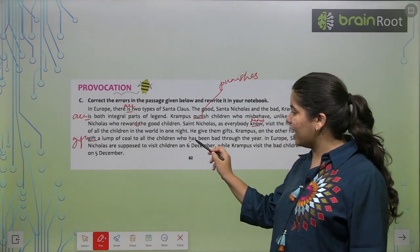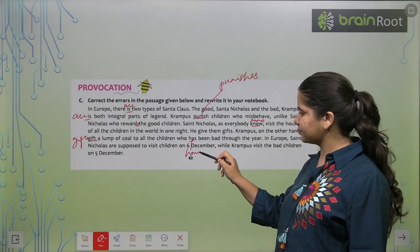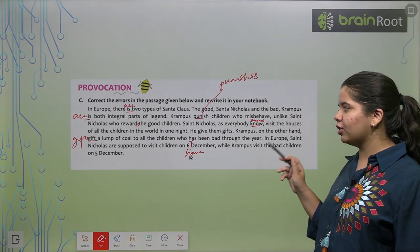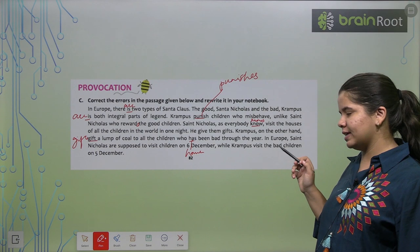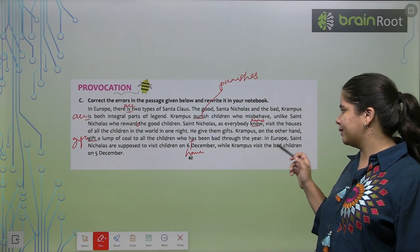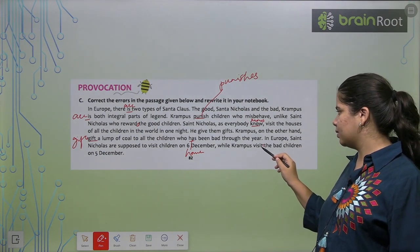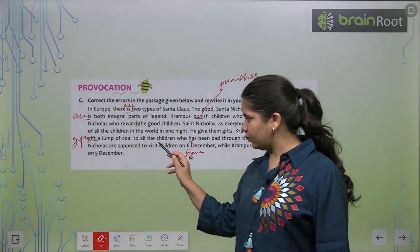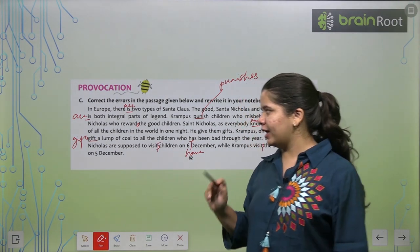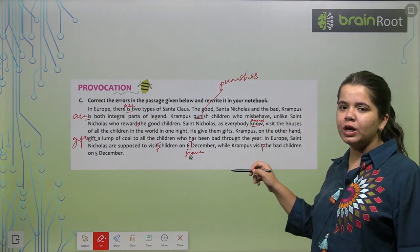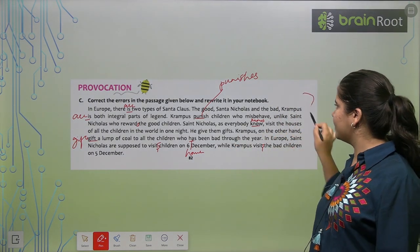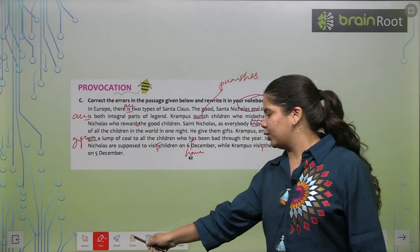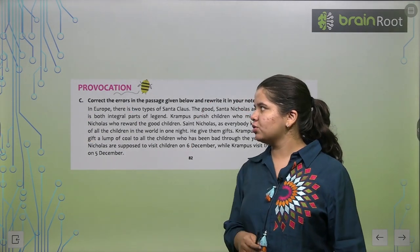Next. Who has, who have been bad through the year. In Europe, Saint Nicholas are supposed to visit children on 6th December. While Krampus visits the bad children on 5th December. So, now you can see how we have made the changes. Aapko ye poora paragraph proper way mein re-write karna hai apne note book mein. Please do it. I hope you were able to understand this also.